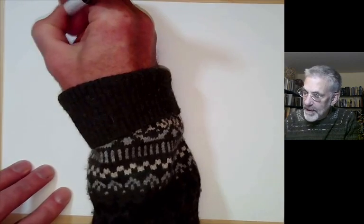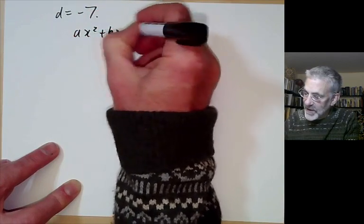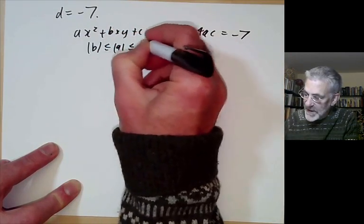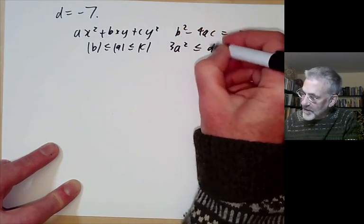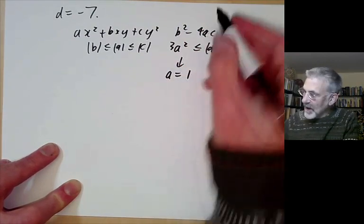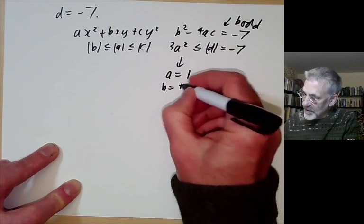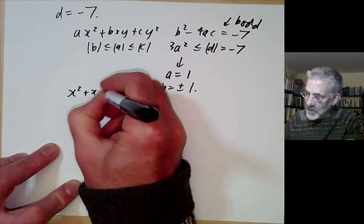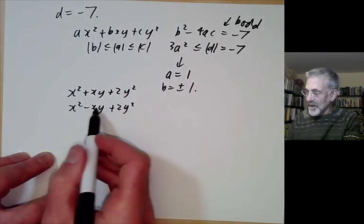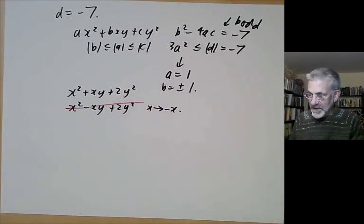Now let's look at discriminant d = −7. We have b² − 4ac = −7, with |b| ≤ a ≤ c, and 3a² ≤ 7, implying a = 1. Then b must be odd with |b| ≤ 1, so b = ±1. This gives two forms: x² + xy + 2y² and x² − xy + 2y². As before, we can get from one to the other by changing x to −x, so we can discard the second. Any positive definite form with d = −7 is equivalent to x² + xy + 2y².